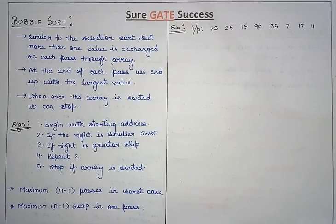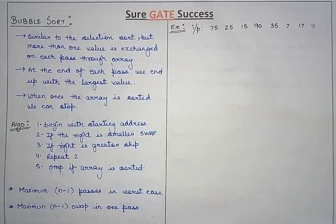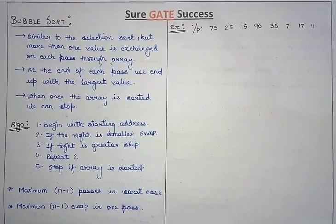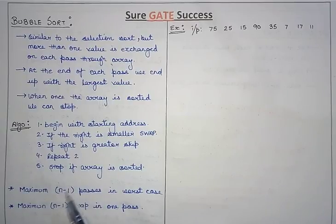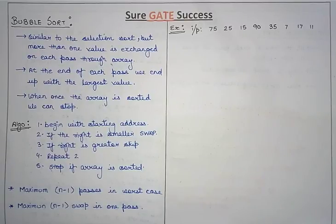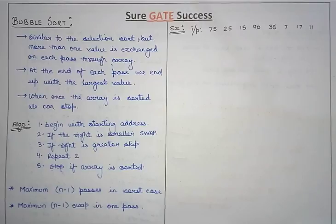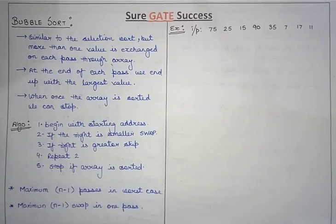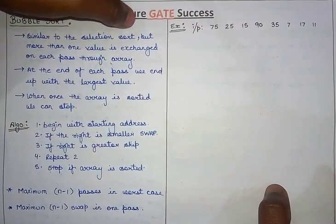That means if the array is already sorted, there is nothing complex in the algorithm. Simply understand: if the right one is the smaller one we have to swap, and if the right one is the greater one we skip it. Similarly we move on until the array is sorted. There will be a maximum of n-1 passes in the worst case.